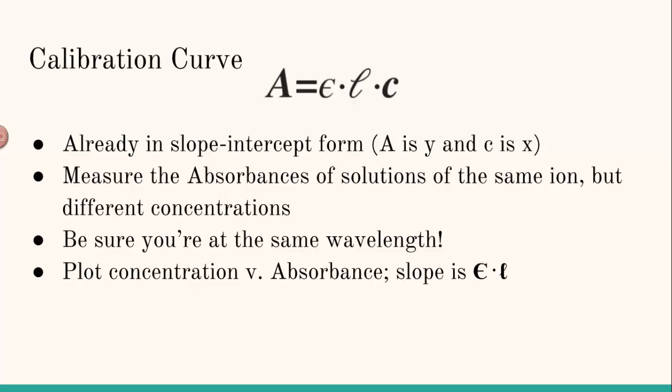Most cuvettes have a side length of one centimeter, and since we know there's a direct proportionality between how thick the solution is and the absorbance, if we keep the cuvettes a standard size of one centimeter, that means L has a value of one. And so the slope is just your molar absorptivity, or your epsilon value.